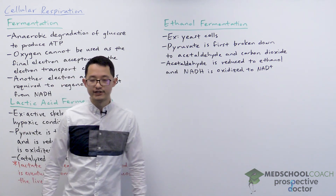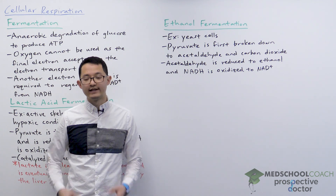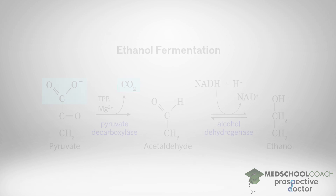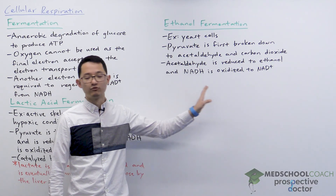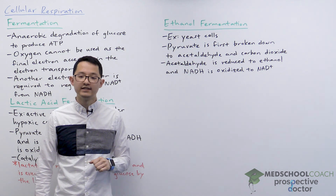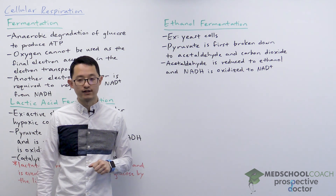Ethanol fermentation is performed by yeast cells. As you can see in this diagram, there are two steps in ethanol fermentation. First, pyruvate is broken down to acetaldehyde and carbon dioxide. Second, acetaldehyde is reduced to ethanol and NADH is oxidized to NAD+. Again, we're able to regenerate NAD+ so we're able to continue to produce ATP using glycolysis.